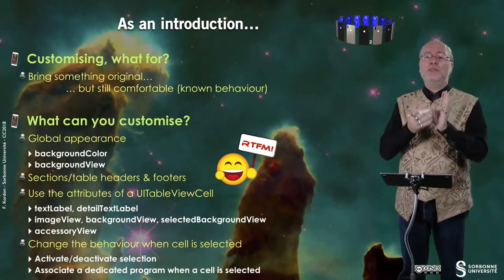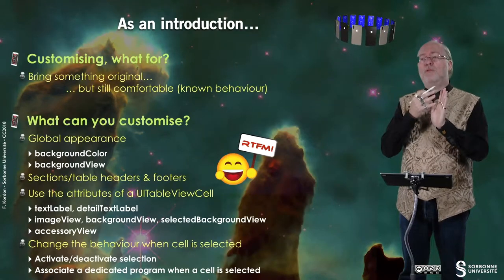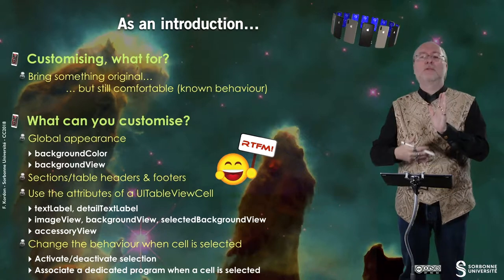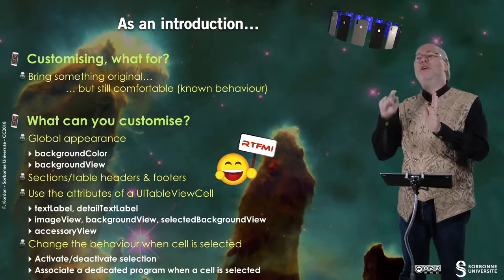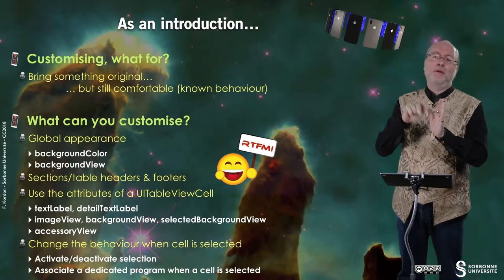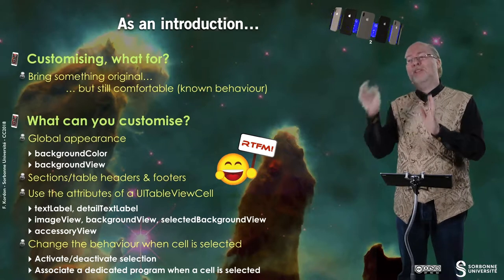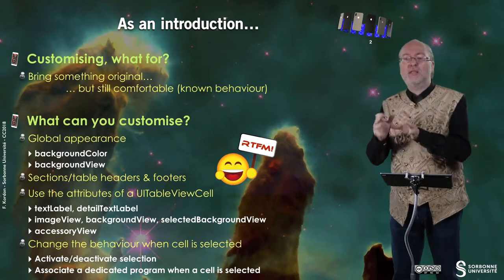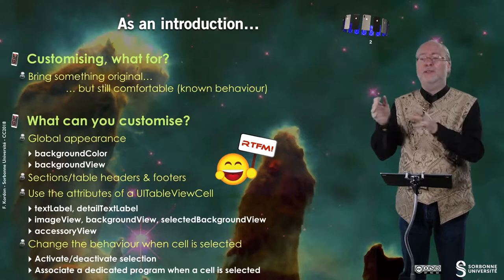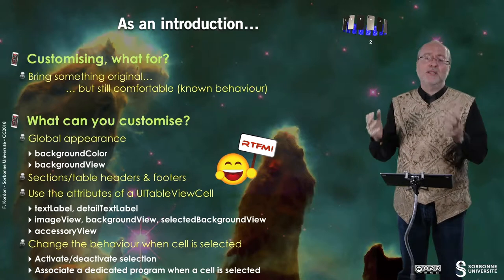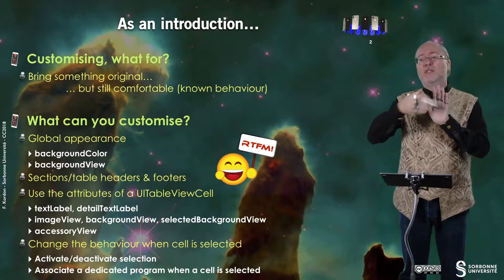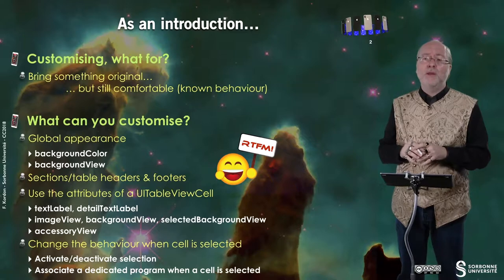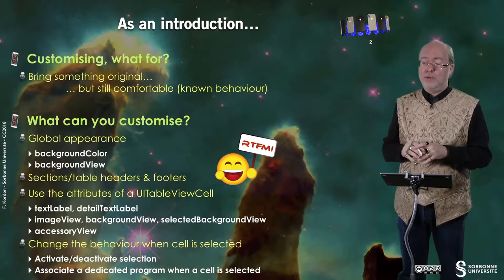So typically, you see that you have hierarchically structured data: a list of cars first, then when you tap on a car you get information about it, and you can go further if you have several levels of hierarchy in the information you display in the TableView.